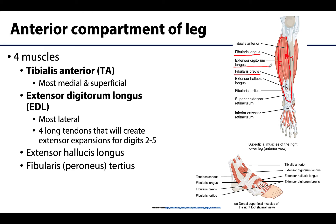The EDL, similar to what we had in the forearm, will have four long tendons that will extend to digits two through five — you can see the extensor digitorum longus belly and its tendons. Deeper in this compartment is also the extensor hallucis longus, which is similar to the EDL but specifically heads to the first digit or the big toe. Additionally, there is a small fibularis tertius muscle that looks like a little slip associated with the EDL; it is not particularly high yield, so we won't have you identify it, but I did want you to have heard the name.